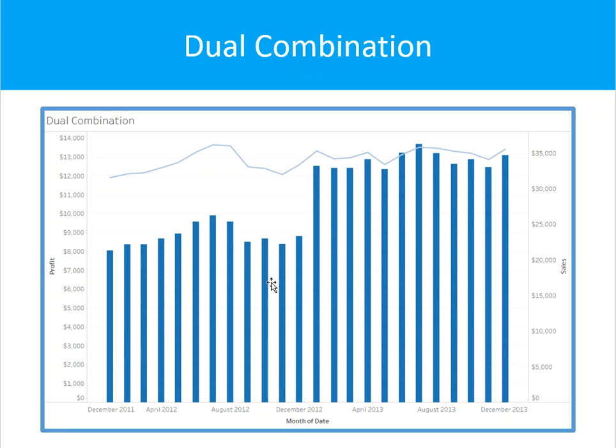Dual combination chart — this allows you to create a view that shows two different measures, for example profit and sales, all in one chart. You can synchronize the axis as it makes sense for your data set — it depends on what you are trying to show. What you need here is one date, zero or more dimensions, and two measures.